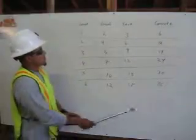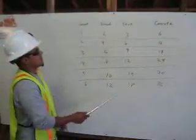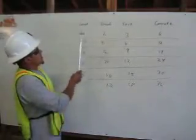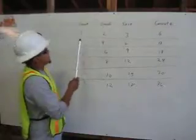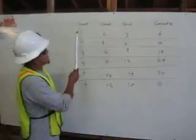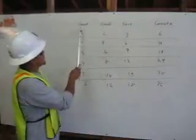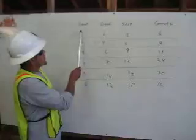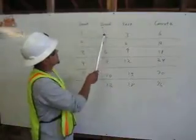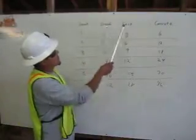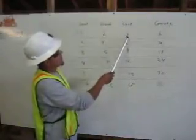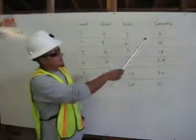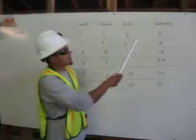So here we have our chart to make concrete. We're going to be using cubic feet right now. For one cubic foot of cement, you would need two cubic feet of gravel and three cubic feet of sand. That gives you six cubic feet of concrete.